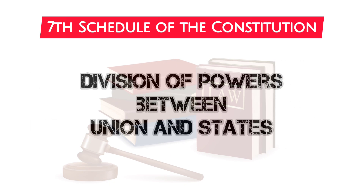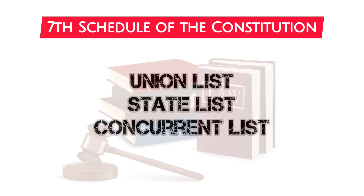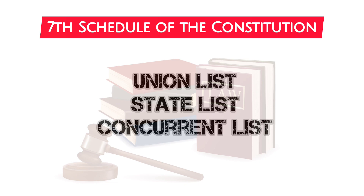One such schedule that outlines how the Union and the states' respective powers ought to be divided is the seventh schedule. Three lists — the Union list, the state list, and the concurrent list — are included in the schedule.